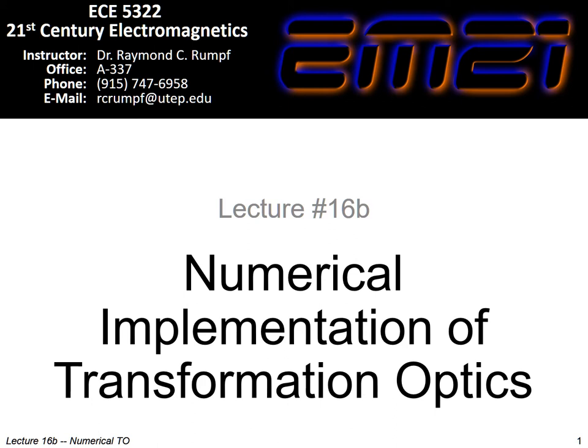What if we don't have that? What if our geometry is rather arbitrary or strange? In this lecture, I'm going to show you how to use the finite difference method, which may not be the most efficient, but it's definitely very simple. I'll show you how to use the finite difference method to do the spatial transform completely numerically, and then also generating the maps of permittivity and permeability numerically.